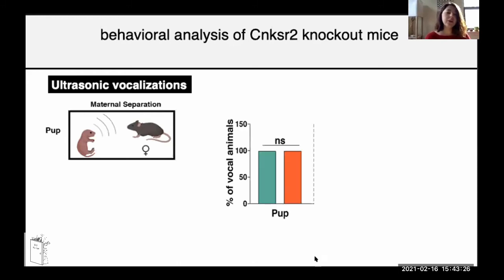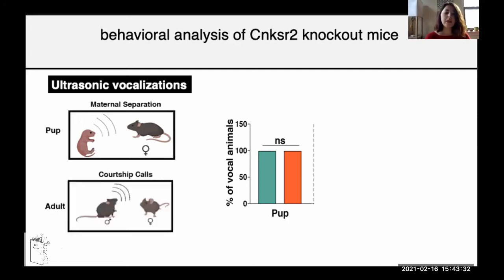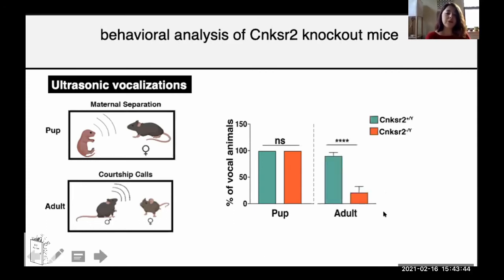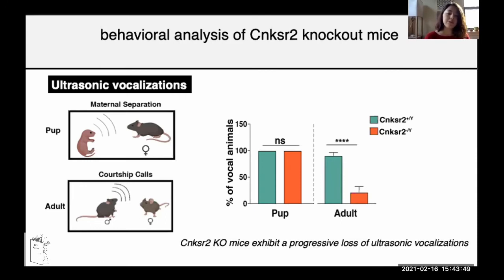I didn't really see a big difference between genotypes in the maternal separation context. But when I aged these mice and looked at different contexts during courtship — in which a male mouse produces vocalizations when placed near a female — I saw a dramatic decrease in the vocalizations of the knockout mice. So it seems to be a progressive loss of ultrasonic vocalizations.